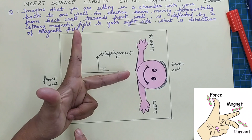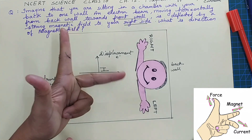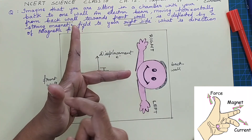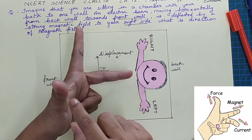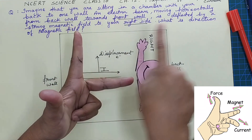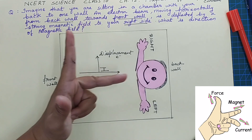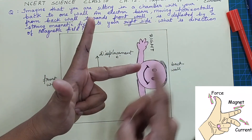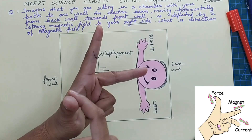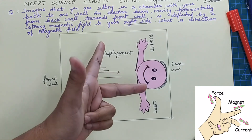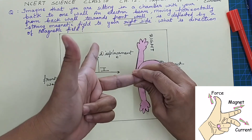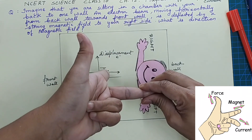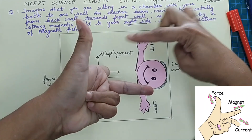Using Fleming's left hand rule: force, magnetic field, and electric current. The current direction is from the front wall to the back wall. The thumb represents the direction of force, meaning the direction in which displacement occurs. As I turn my left hand with these three fingers mutually at right angles, the thumb points towards the right side.